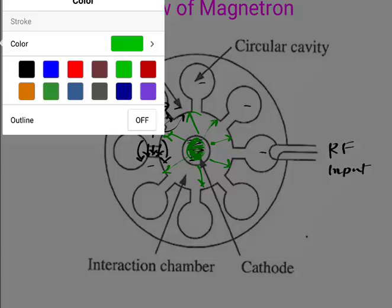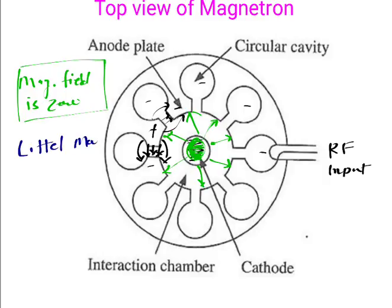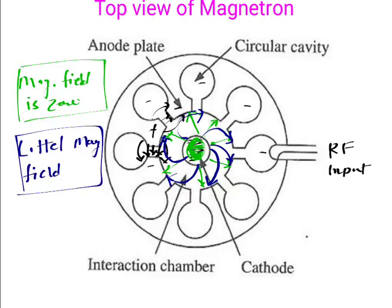In the second case, when we increase the magnetic field a little, the electron emerging from the cathode experiences a horizontal force. Instead of moving in a straight path, it tilts slightly and still reaches the anode cavities, but with a curved trajectory. The magnetic force tilts the electron's direction. The reason is that a small magnetic field gives a small magnetic force, which changes the direction slightly.